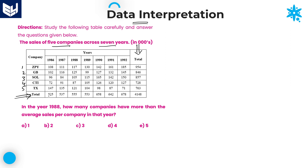The years are 86, 87, 88, 89, 90, 91, and 92 — 7 different years — and the sales are given in terms of thousands. Each and every value is in terms of thousands, so you need to keep 3 zeros at the end of each value in the table.